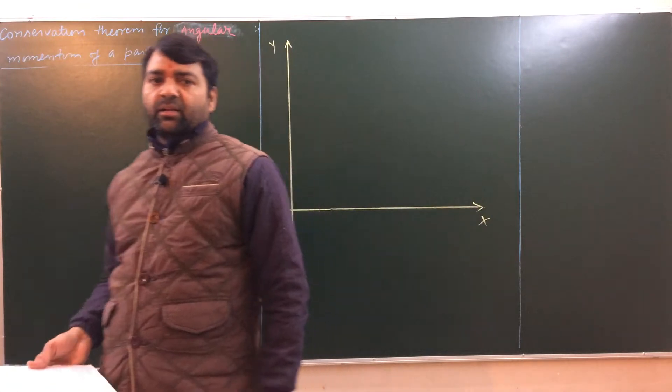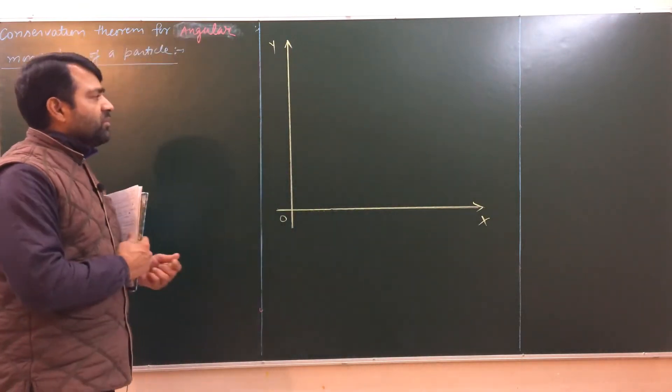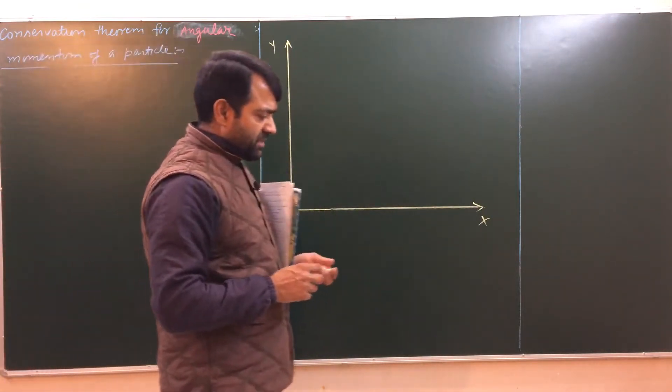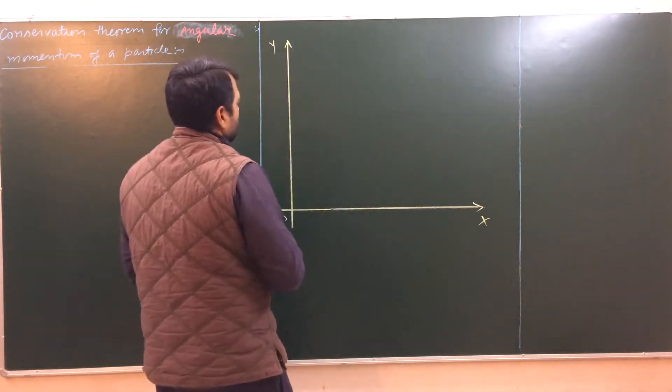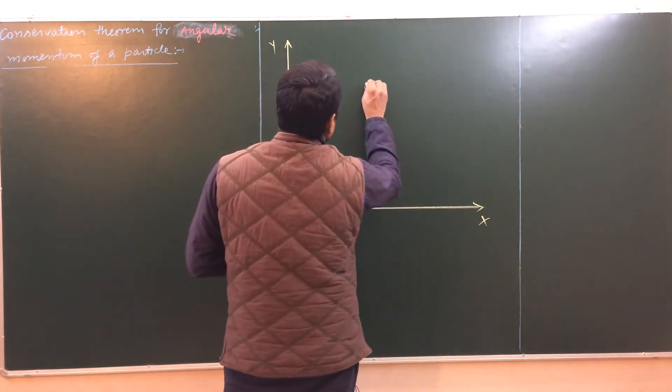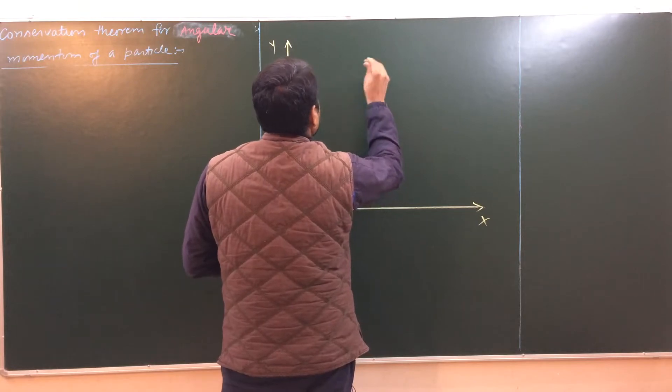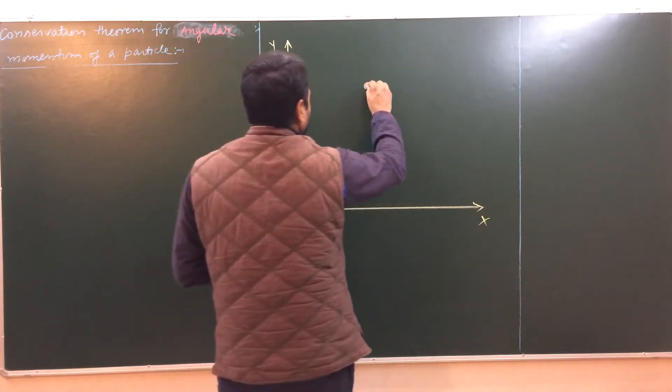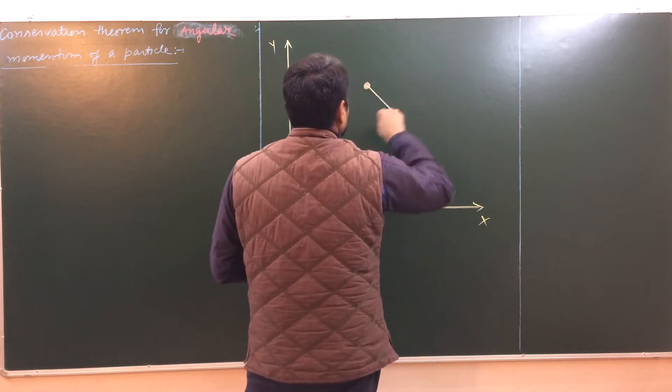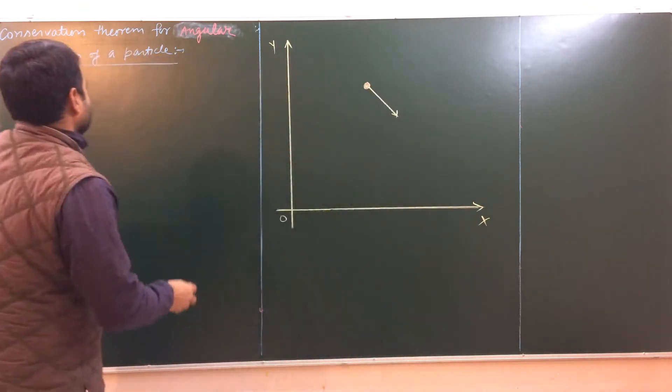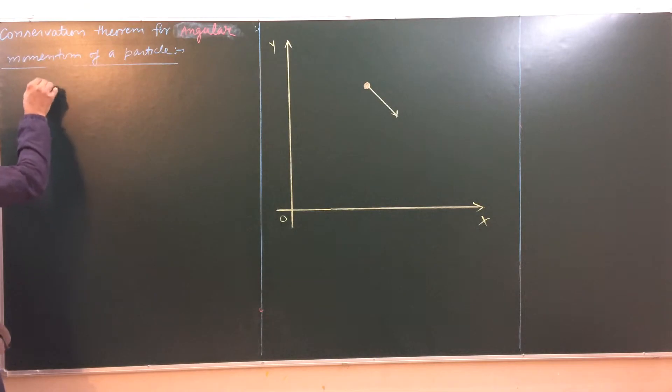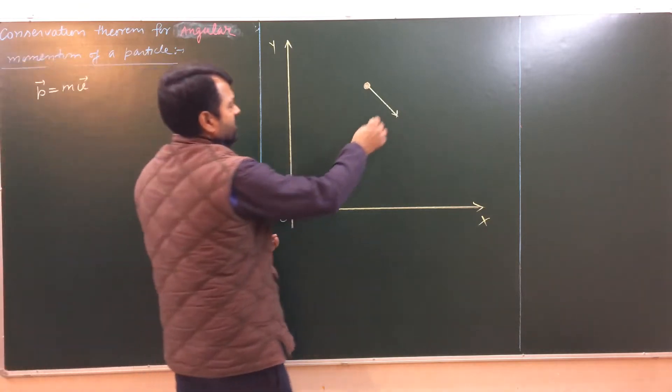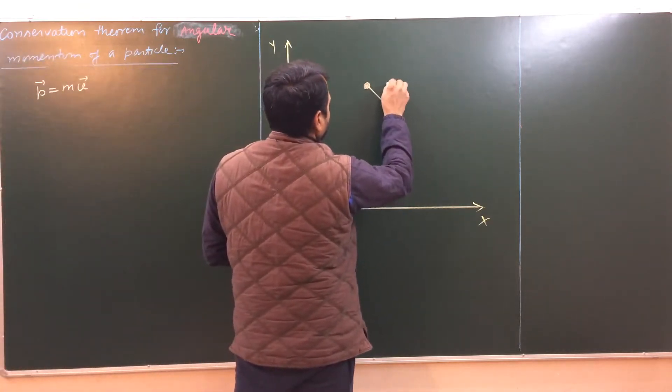Consider a particle of mass m which is moving arbitrarily in space with some velocity v. So it is a particle of mass m moving with some velocity v. Then its linear momentum will be p equals mv. The direction of momentum and velocity is same, so we can say this is the direction for p.